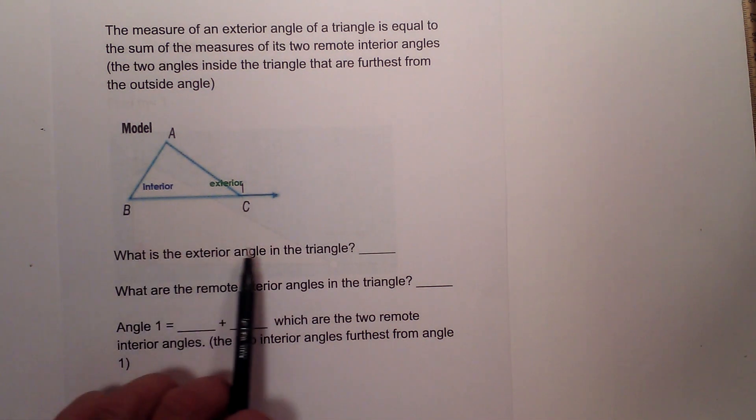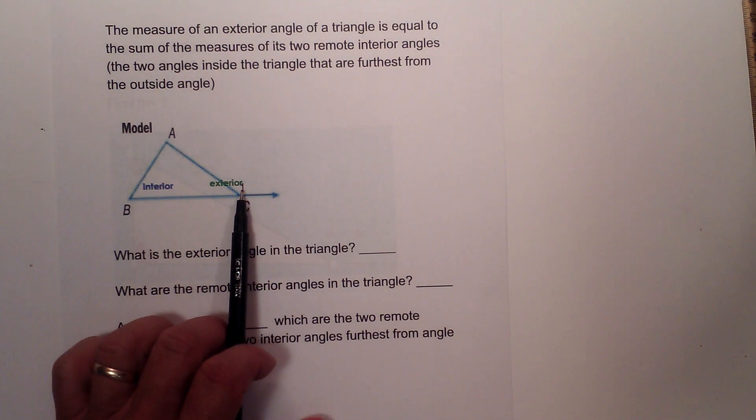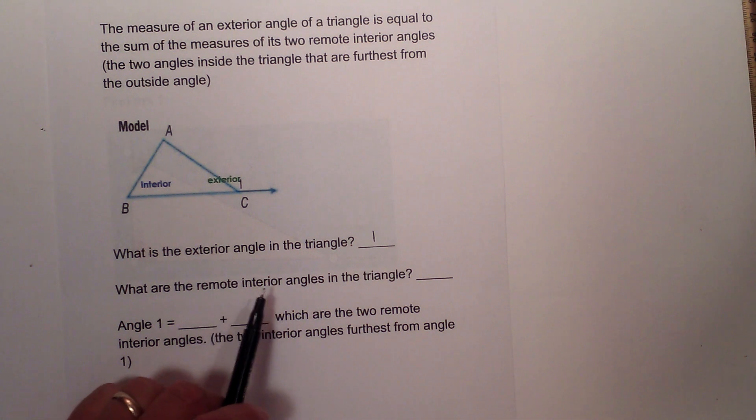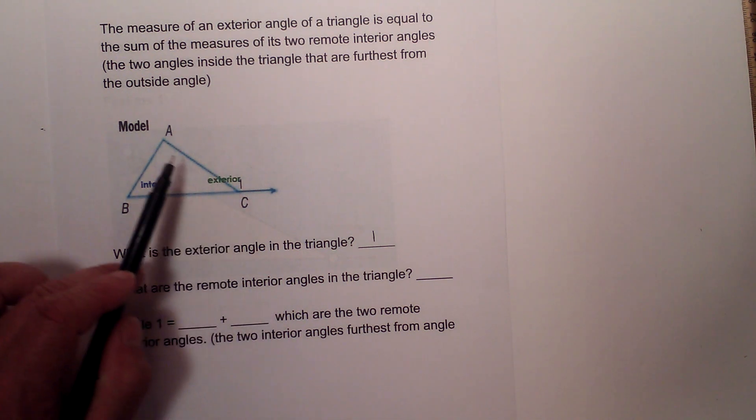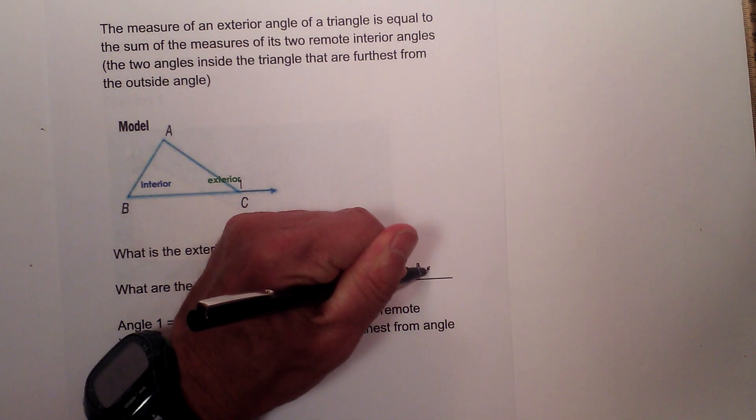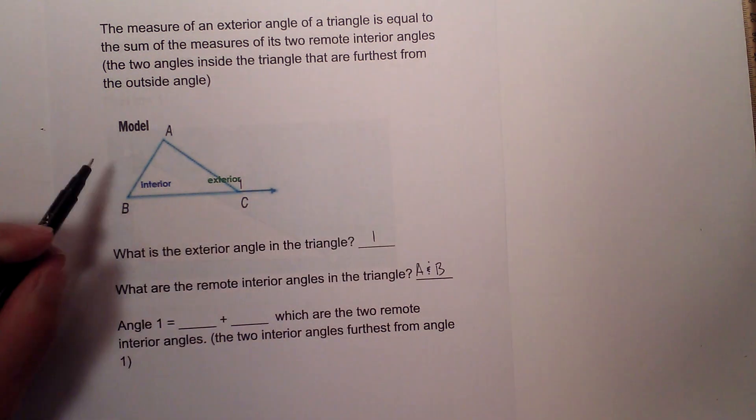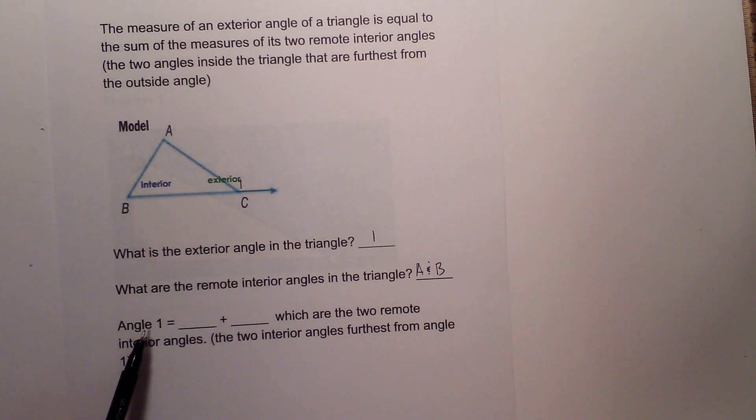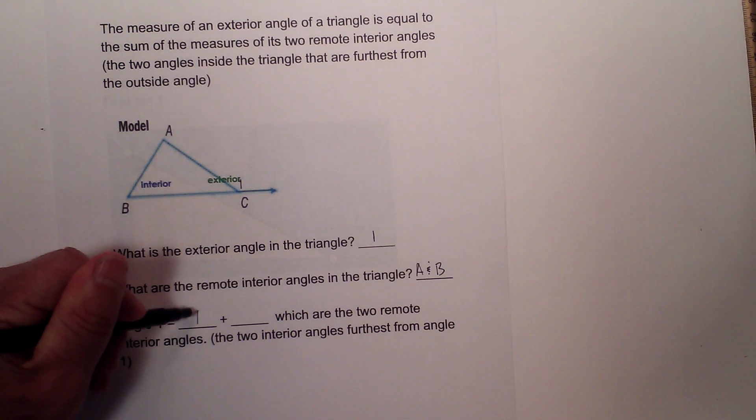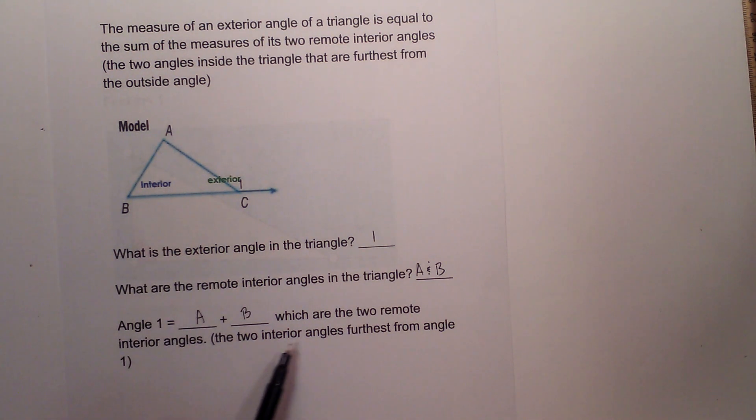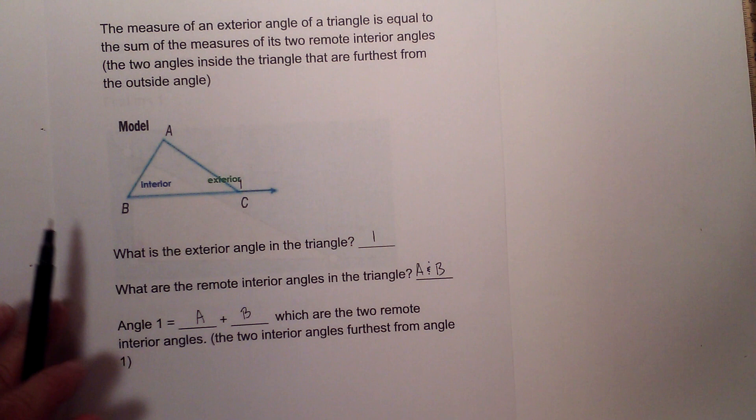In this example, what is the exterior angle in the triangle? It would be angle 1. What are the remote interior angles? The two interior angles that are furthest, so it would be A and B because they are furthest from 1. Then angle 1 would be equal to angle A plus angle B because they are the two interior angles furthest from angle 1.